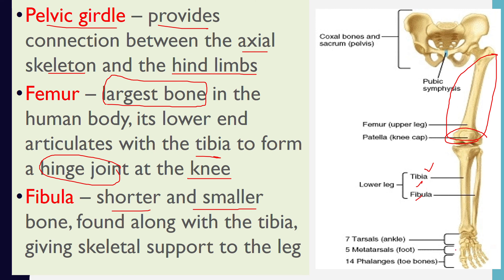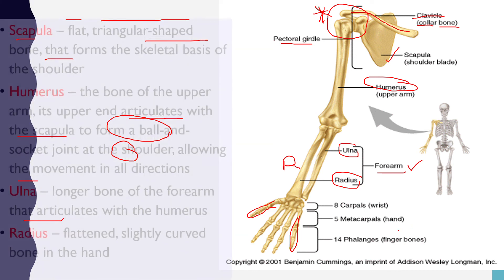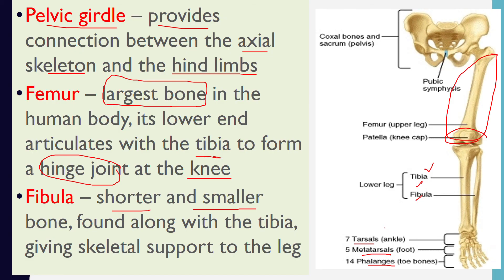The foot bones are the tarsals, metatarsals, and phalanges — the toe bones. Going back to the hand, the wrist bones are the carpals, then the metacarpals, and the phalanges — the finger bones. You need to know these bone names as you may be asked to label them.